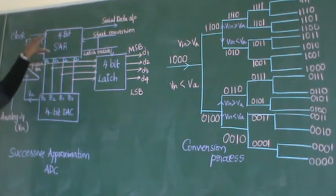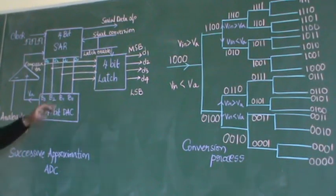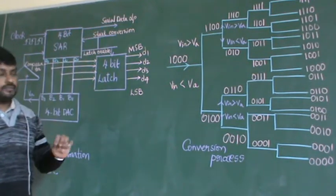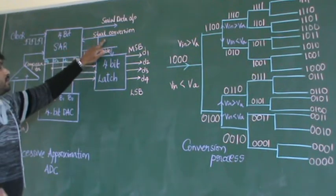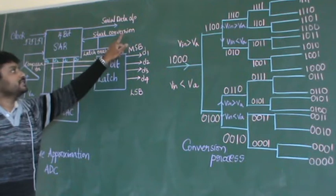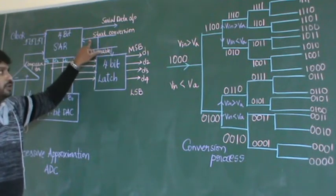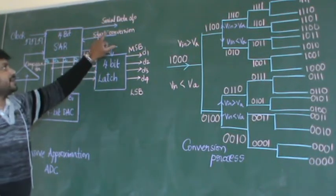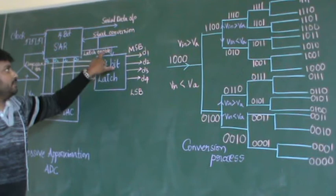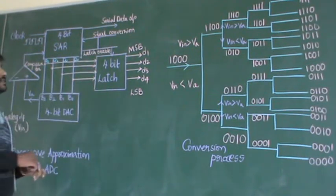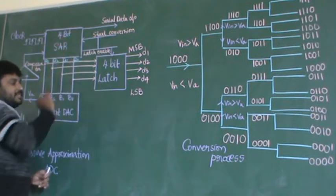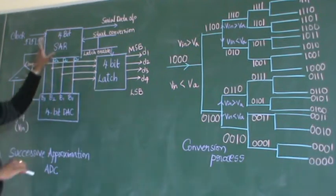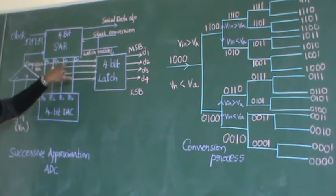When there is a clock pulse, the SAR will work. The outputs coming from the SAR are Q3, Q2, Q1, and Q0. Inputs to the SAR include the start conversion signal and latch enable. So these are the three key terms to remember. Whatever output comes from the SAR — Q3, Q2, Q1, Q0 — that is the data going to the DAC.